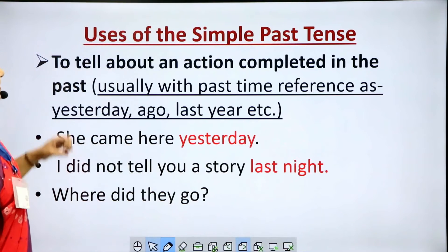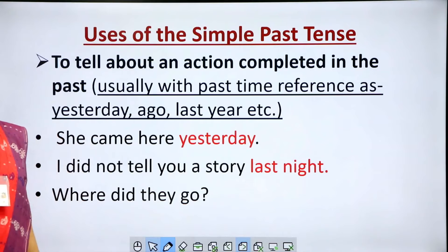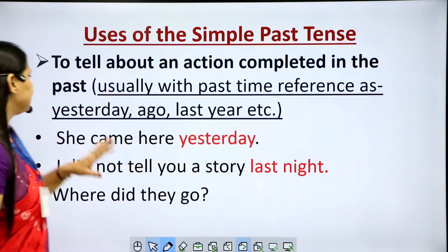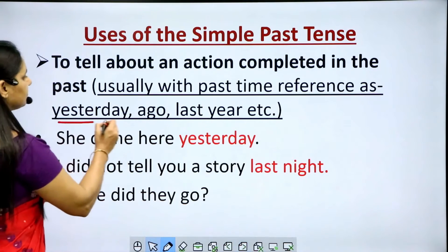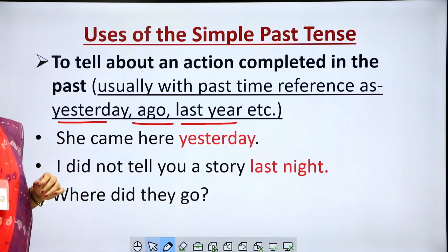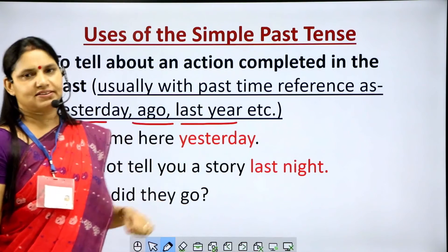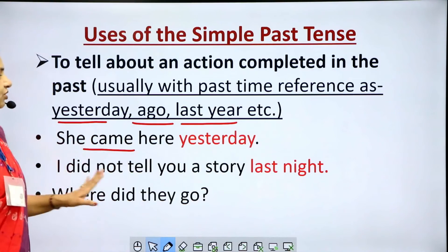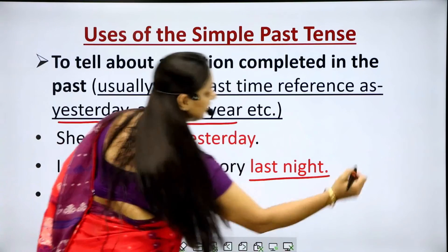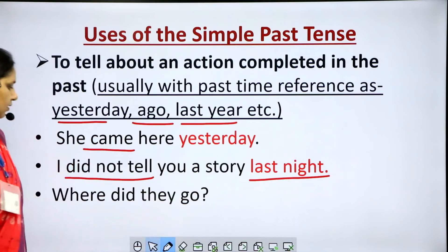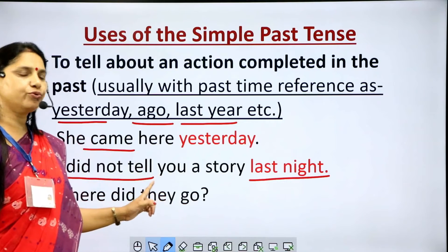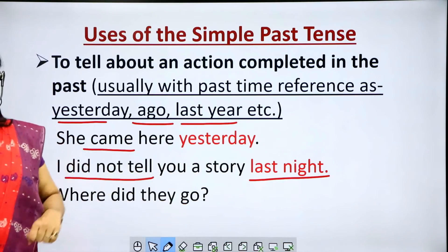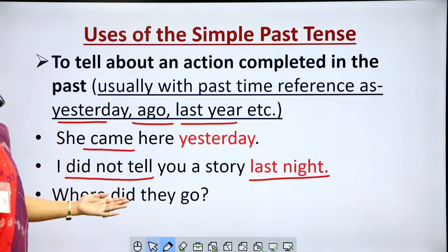Uses of the simple past tense. First, to tell about an action completed in the past, usually with past time references such as 'yesterday', 'ago', 'last year'. Examples: 'She came here yesterday.' — 'came' is V2 and 'yesterday' is the past time reference. 'I did not tell you a story last night.' — 'last night' is a past time reference and 'did not tell' is the negative past form. 'Where did they go?' — also simple past denoting an action completed in the past.